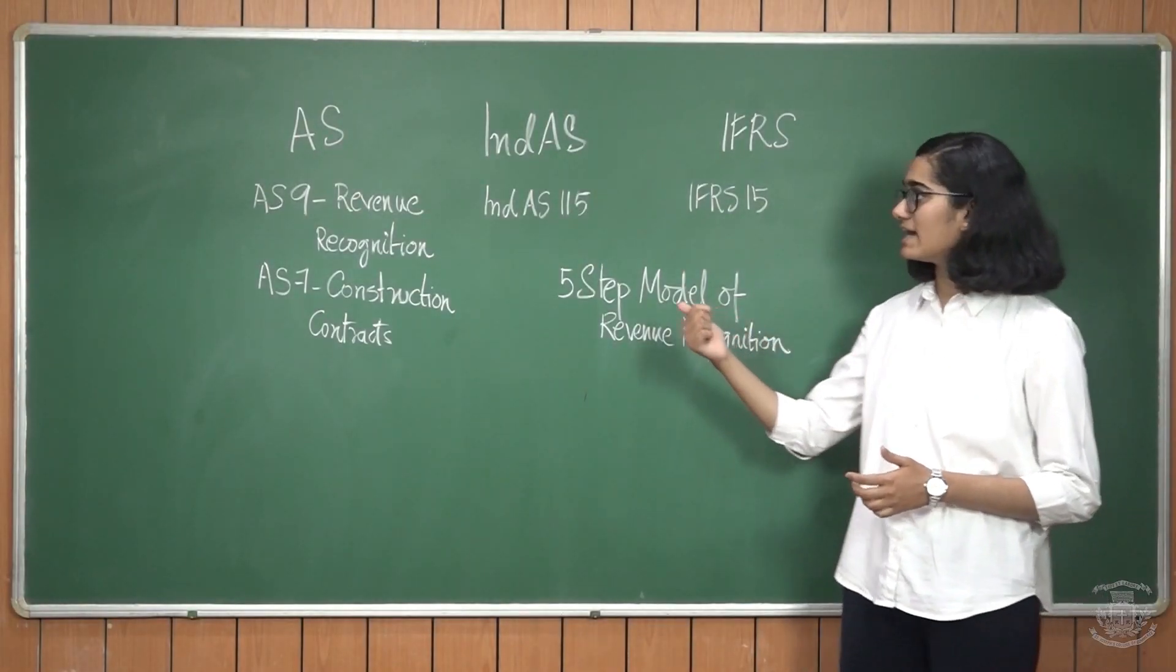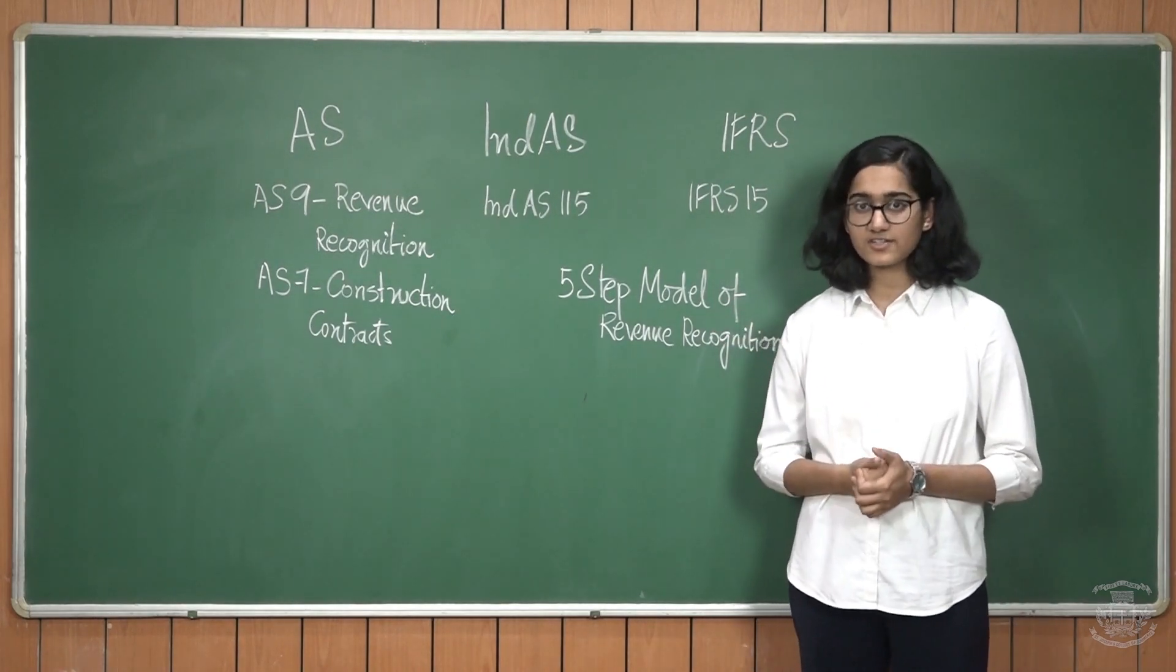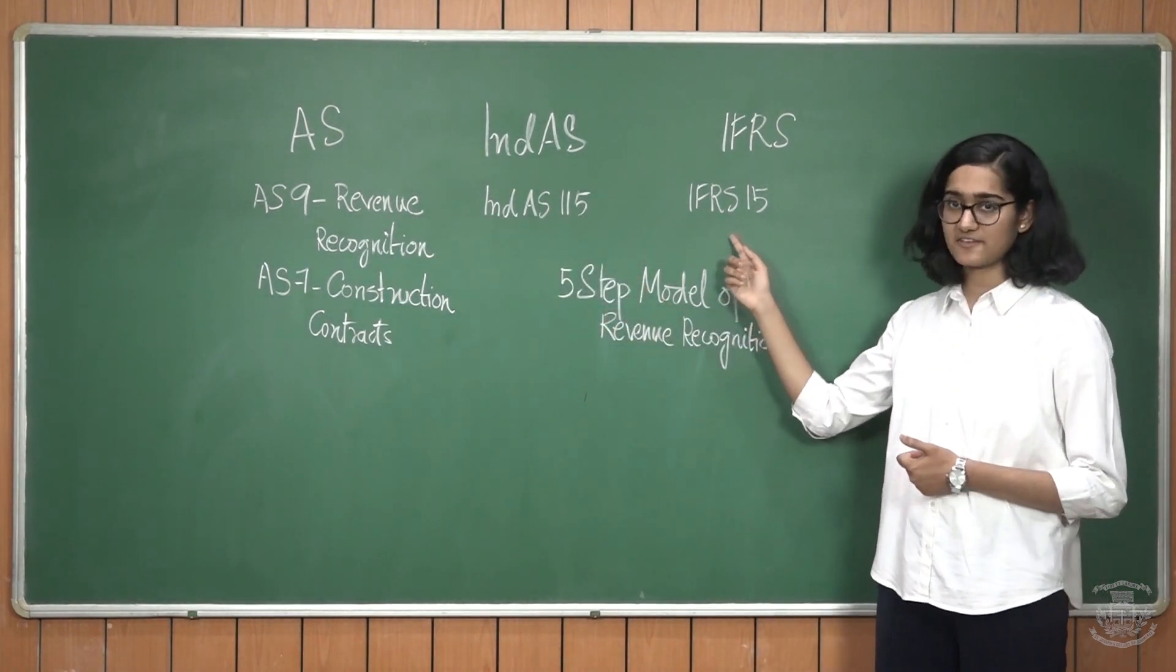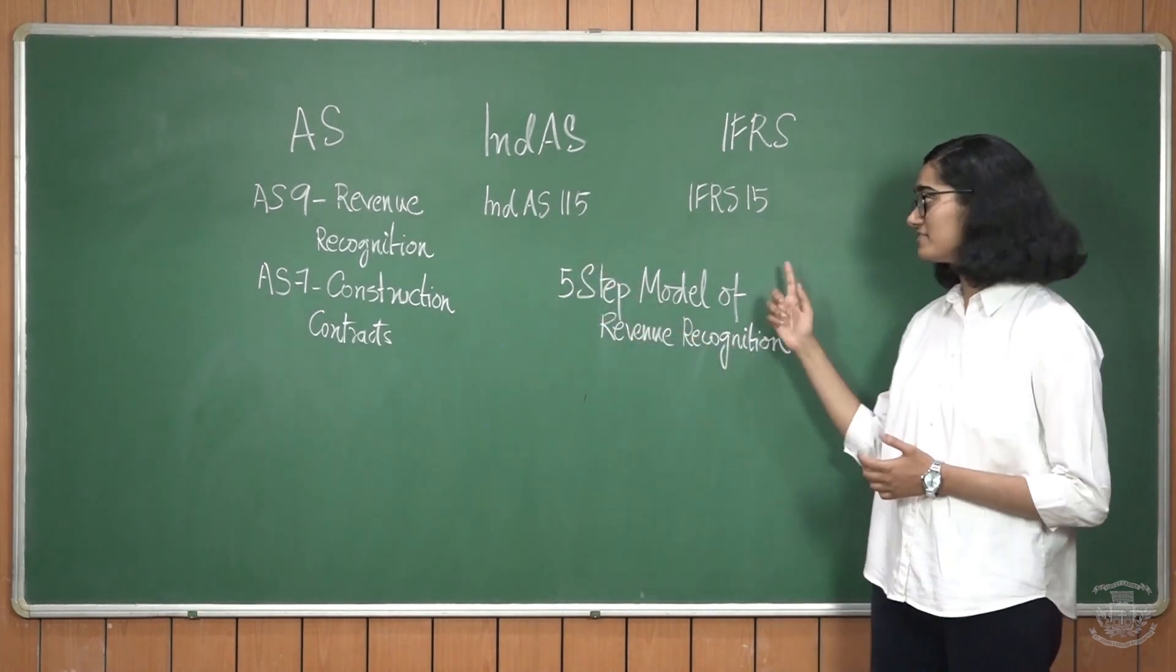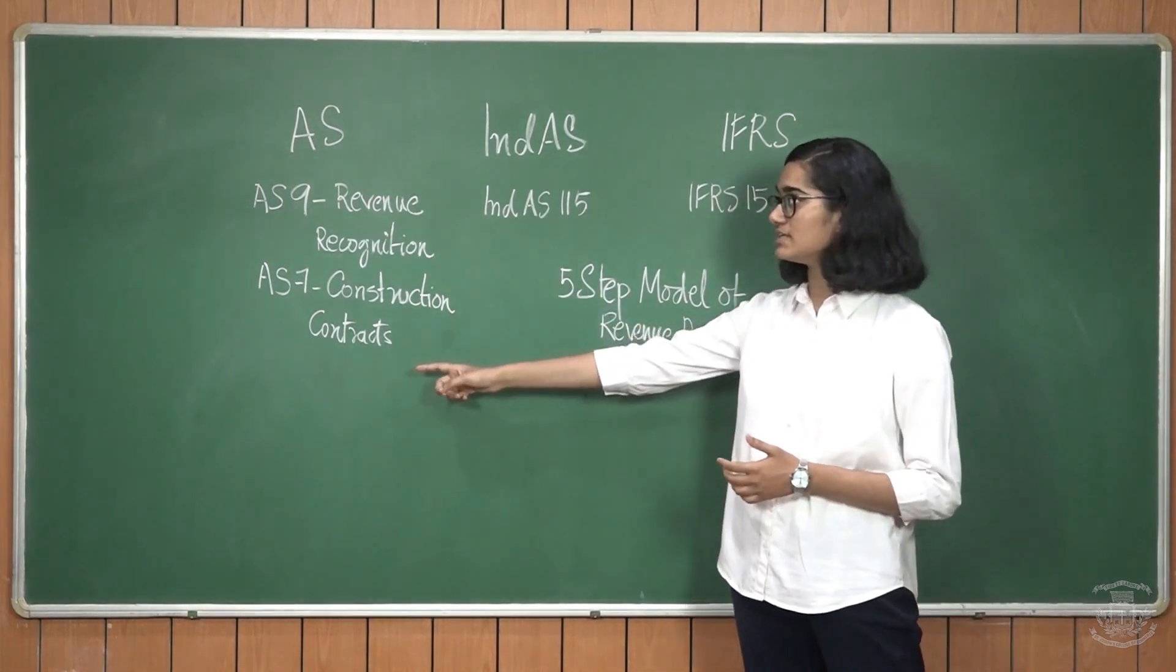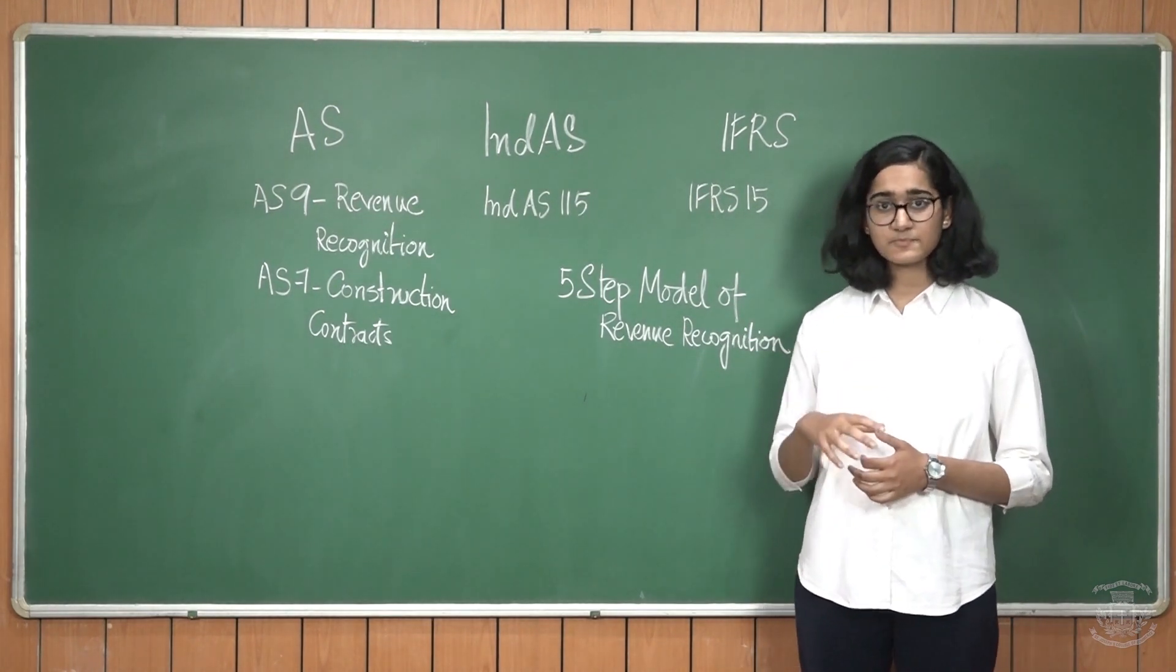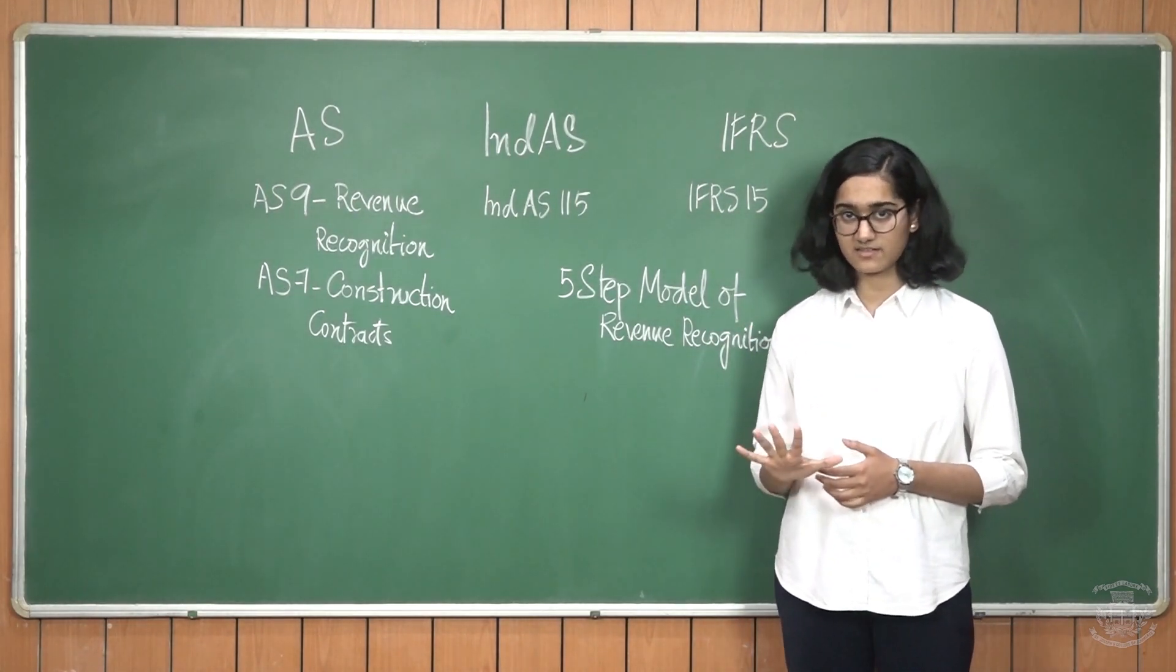Now let's come and look at IndAS and IFRS. Revenue from customer contracts in case of IndAS is dealt with under IndAS 115 and in case of IFRS is dealt with in IFRS 15. There is no major difference between IndAS 115 and IFRS 15, but there exists a huge difference when you see AS. The major reason for such difference is because of the five-step model of revenue recognition. As per this model, revenue can be recognized only if the five steps can be satisfied.